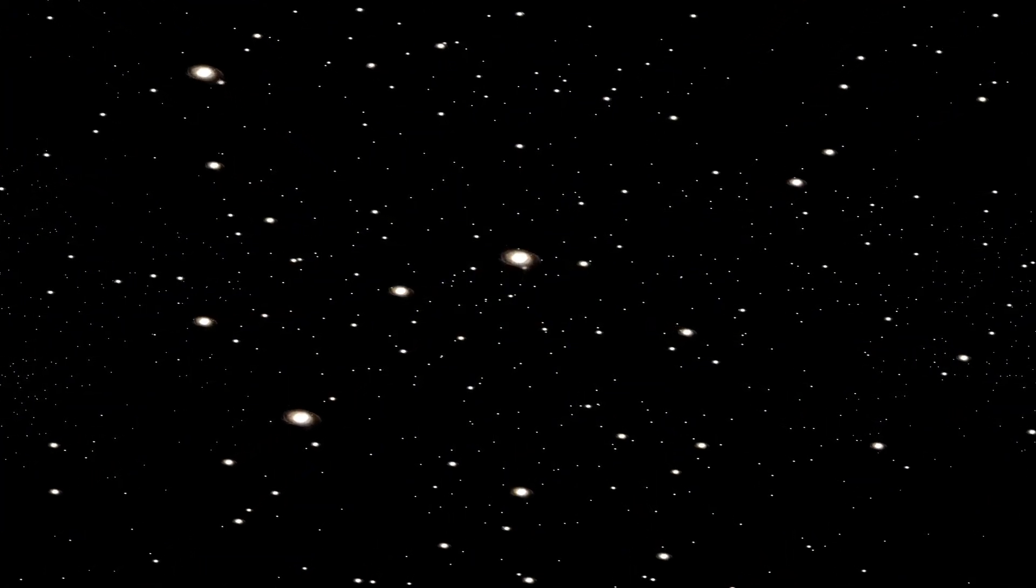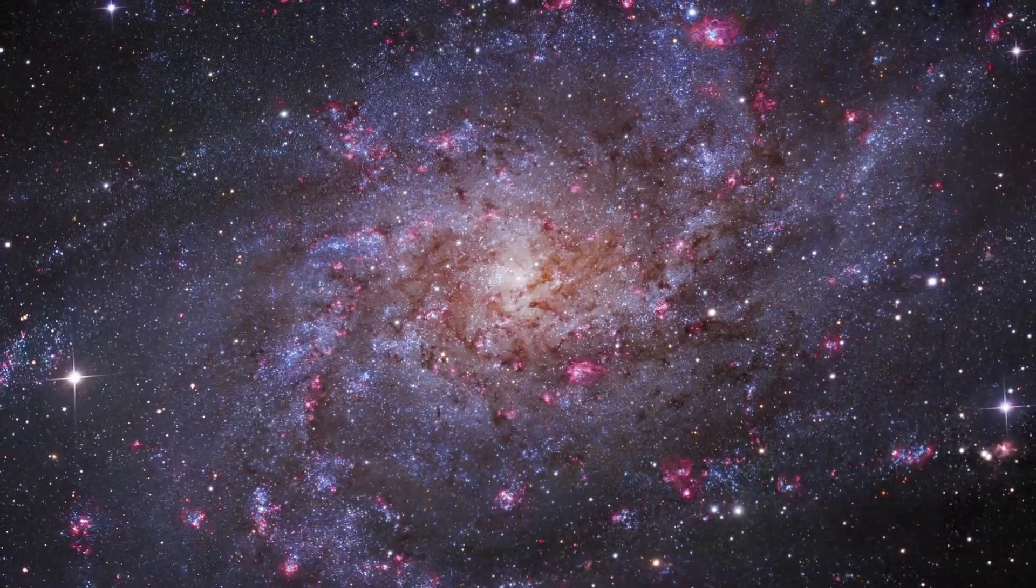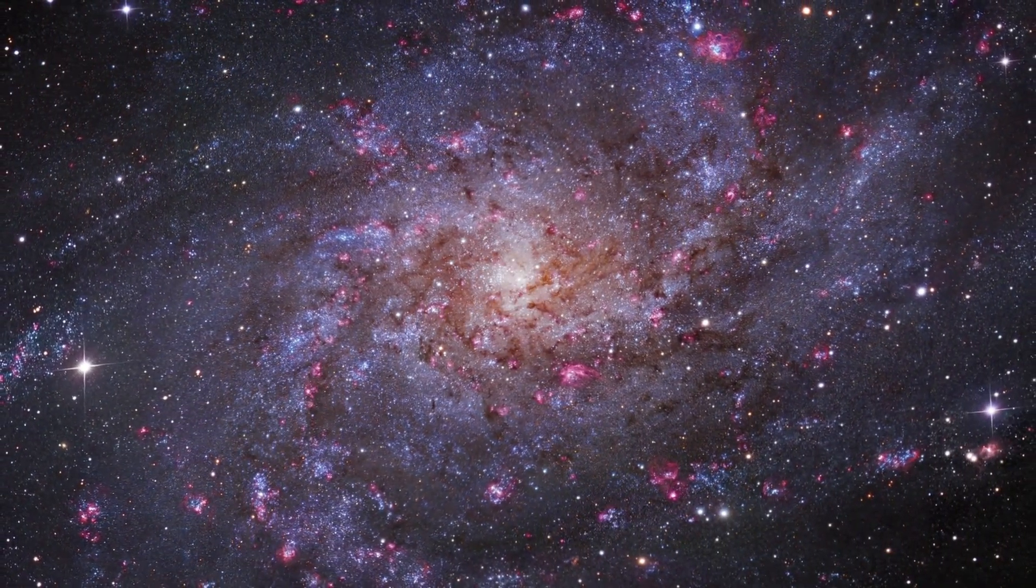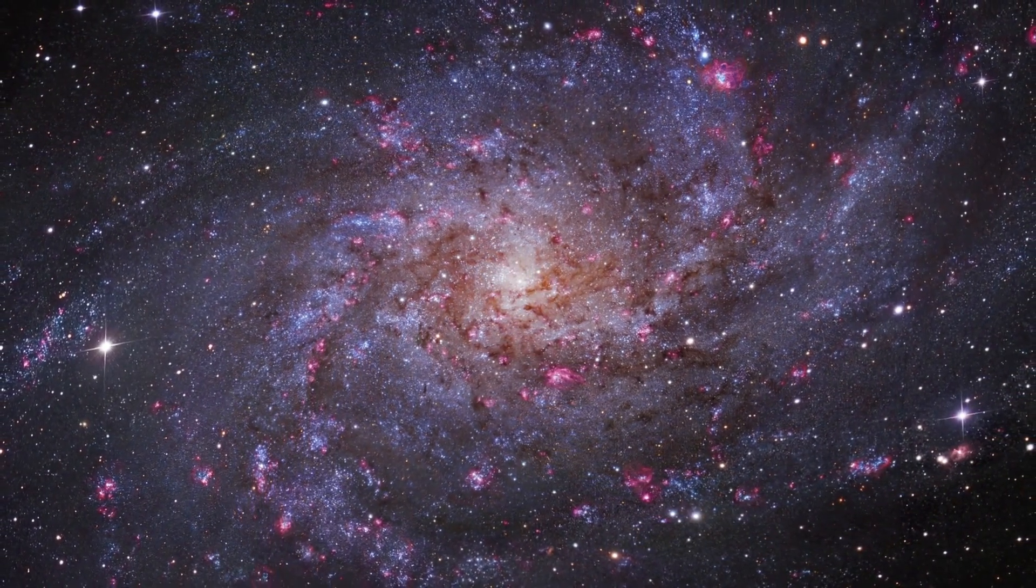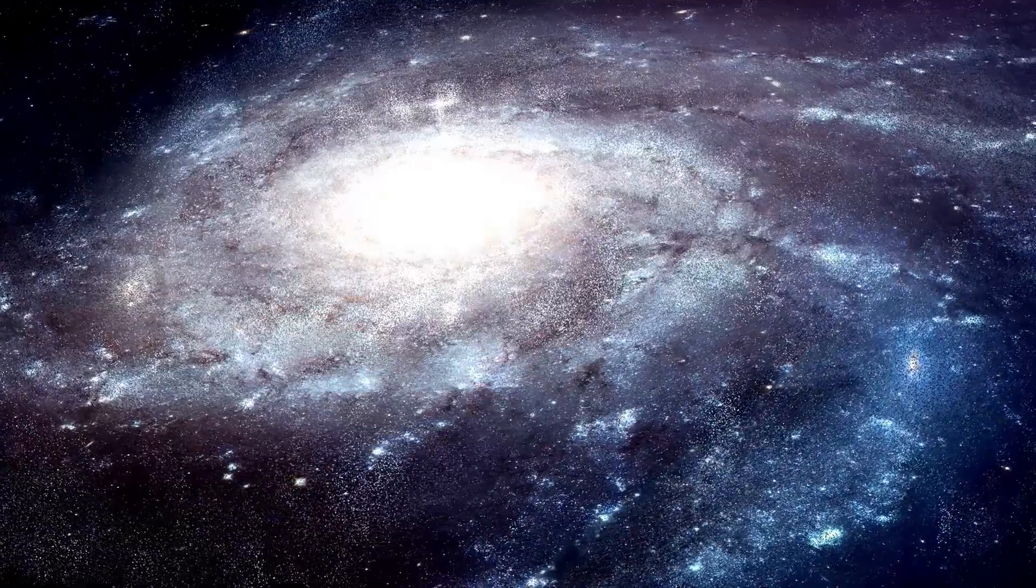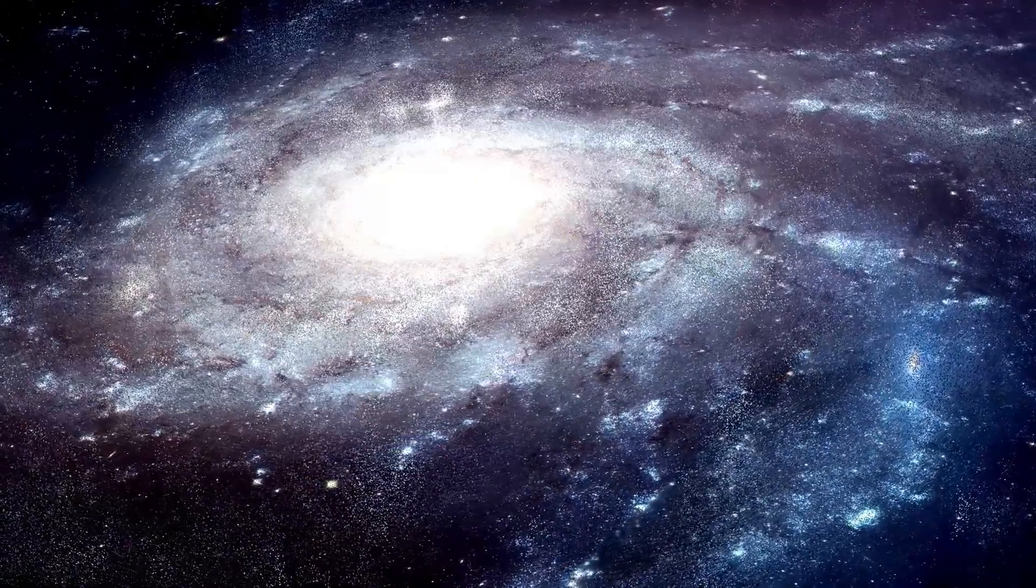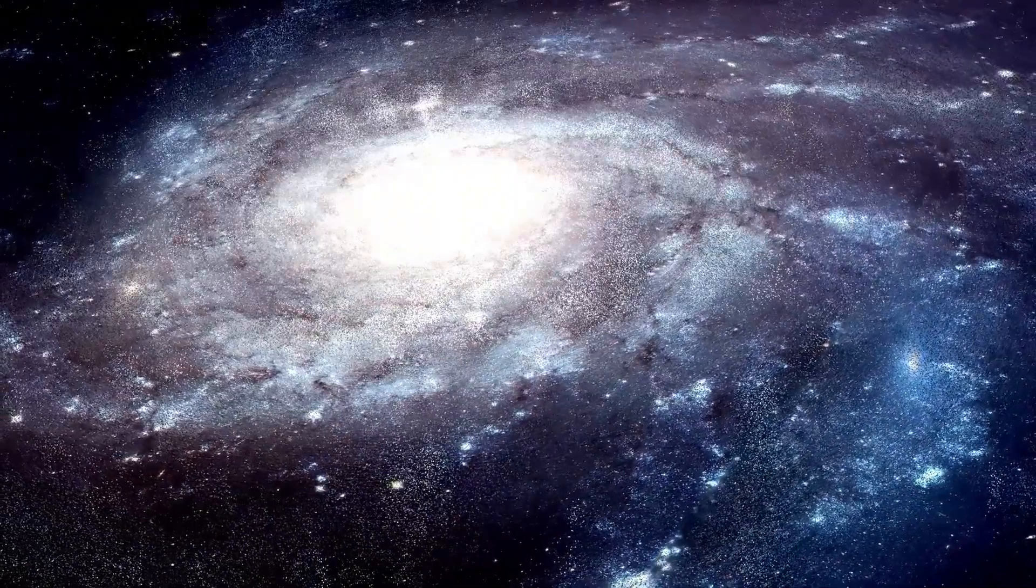Betelgeuse loses about one solar mass every 10,000 years. The red star is surrounded by a nebula because this material is being ejected unevenly from the star in all directions. A cloud of material 250 times larger than the star surrounds Betelgeuse, and the size of this nebula is thought to be 30 astronomical units, or 30 times the solar distance between the Sun and Neptune, the furthest planet in the solar system.